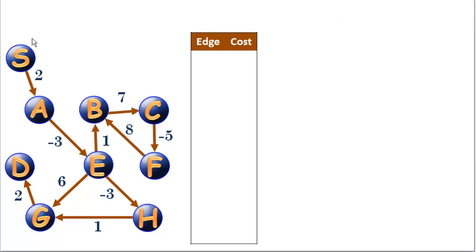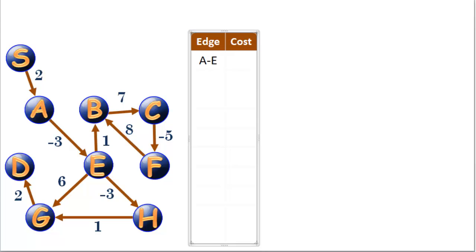The first thing we're going to do is list out all the edges in the graph with the cost to each edge. We'll do this alphabetically. From vertex A, which only has one edge — A to E at a cost of negative 3. All the edges out of B: B only has one edge, B to C at a cost of 7.